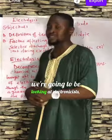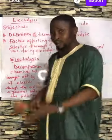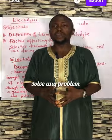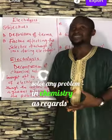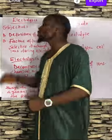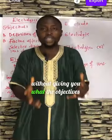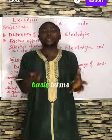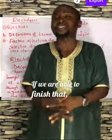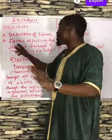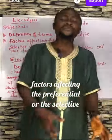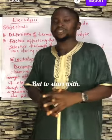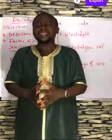For this night, we're going to be looking at electrolysis. Basically, these are the objectives of the class. We cannot solve any problem in chemistry as regards this class — as regards KMZ International — without giving you the objectives of the class. So tonight, we're going to be looking at the definition of basic terms in electrolysis. If we are able to finish that, we'll look at the factors affecting the preferential or selective discharge of ions during electrolysis. But to start with, we'll be looking at the definition of terms.